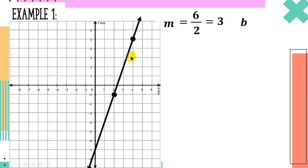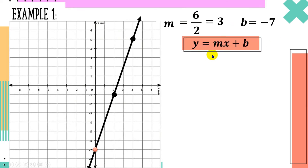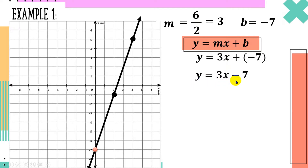For the y-intercept, if the line doesn't yet reach the y-axis, we can extend it to see where it intersects. In this example, the line clearly intersects the y-axis at negative 7, so that is our y-intercept. Now we have our slope and y-intercept, so we can substitute into the slope-intercept form. The slope m is positive 3, giving us 3x, and the y-intercept is negative 7. So y equals 3x plus negative 7, which we rewrite as y equals 3x minus 7. This is the equation of this line.